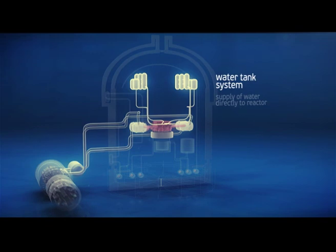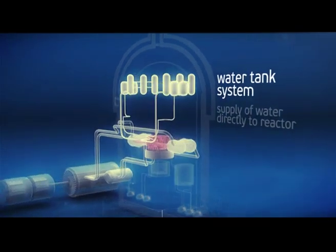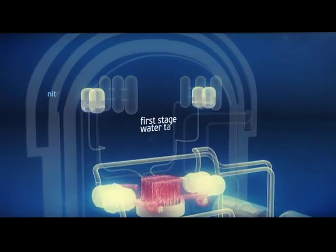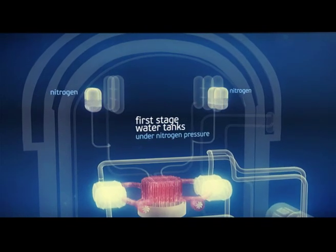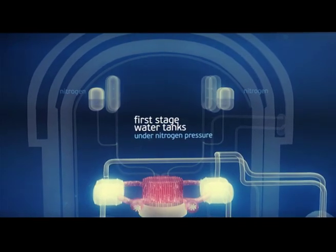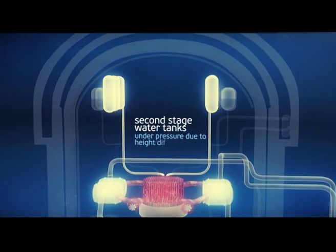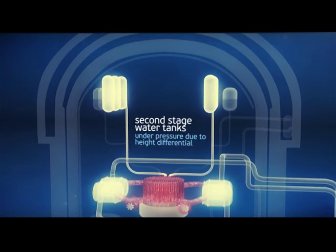From water tanks of the first stage, water gets in the reactor under pressure of nitrogen pumped in the upper section of the water tanks. Water tanks of the second stage supply water to the reactor owing to a difference in height at which the reactor water tanks are installed.